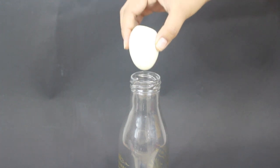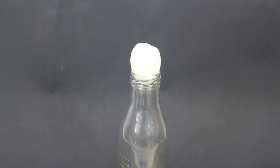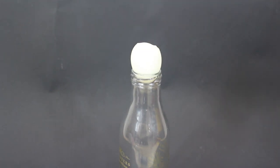Choose the glass bottle such that the mouth of the bottle is slightly smaller than the size of the egg. Hence it is not possible to put the egg in the bottle directly.